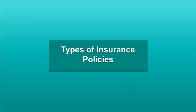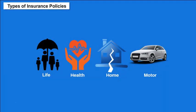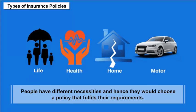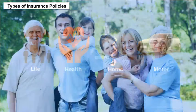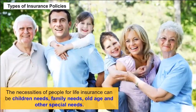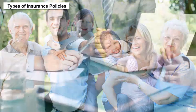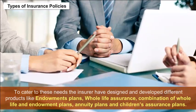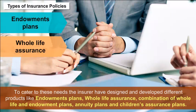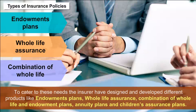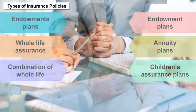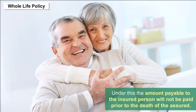Types of Insurance Policies: People have different necessities and hence would choose a policy that fulfills their requirements. Needs for life insurance can be children's needs, family needs, old age, and other special needs. To cater to these, insurers have designed products like endowment plans, whole life assurance, combination plans, annuity plans, and children's assurance plans.